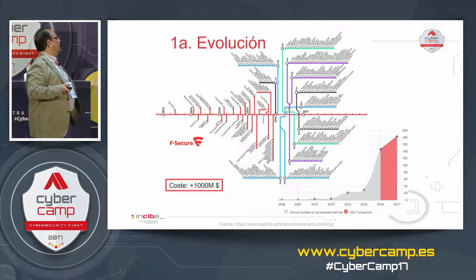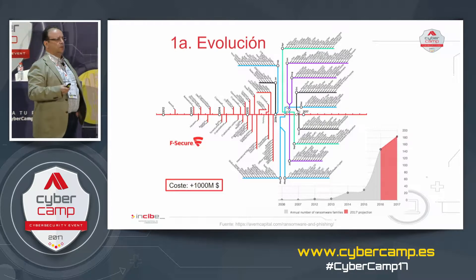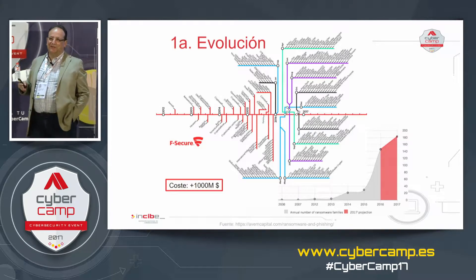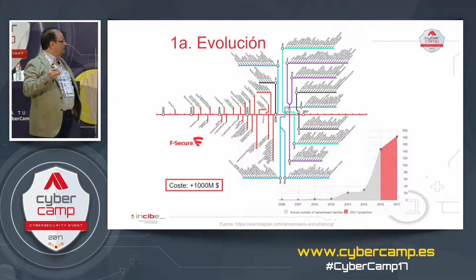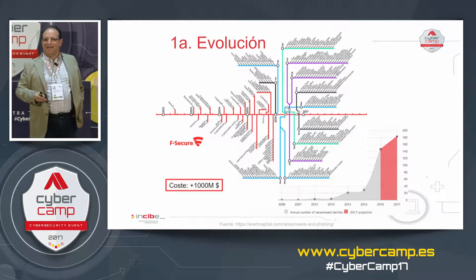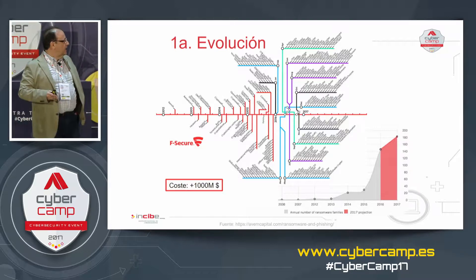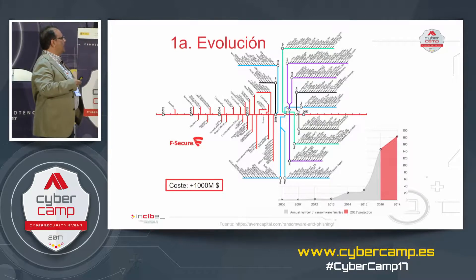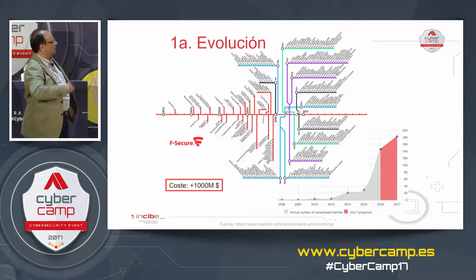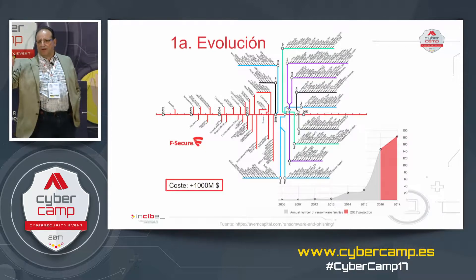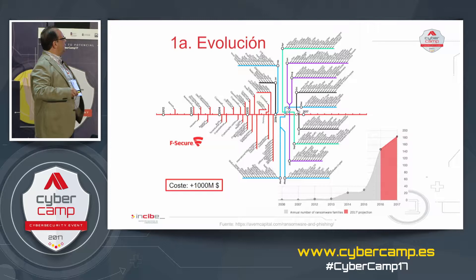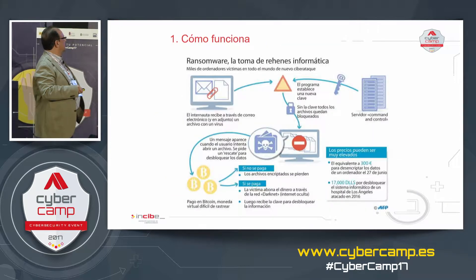This is due to the economic profit obtained. The estimated cost for this year is $1 billion. In many cases, ransomware requires small amounts — 200–300 euros — but the profit comes from infecting thousands of devices, as we saw with WannaCry. So the economic profit for cyber criminals is very high, and all ransomware families have grown as a result.